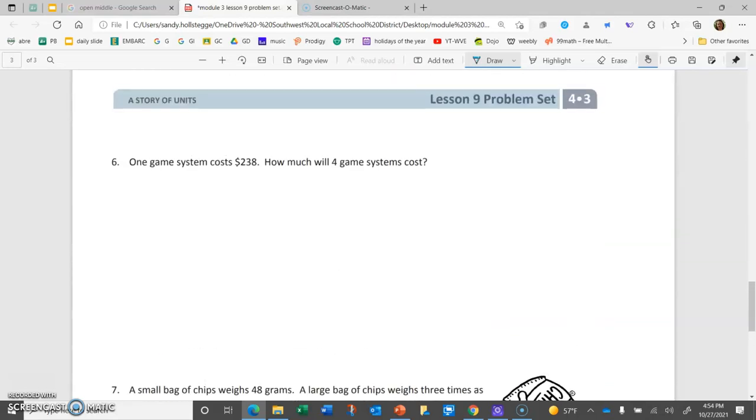If we take a look at number 6, one game system costs $238. How much will four game systems cost? Four groups of 238. So, $238 times 4. Four times 8 is 32. Three to the tenths place. Four times that three tenths, that's 12 tenths. Plus three more tenths makes 15 tenths. I'll write the 5. I'll carry the 1. Finally, we have 4 times 2 hundredths. Four times 8 hundredths. Plus one more hundred makes 9 hundredths. So, I think my answer is $952.